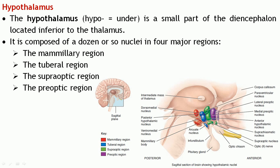Coming to the next part of the diencephalon: the hypothalamus. 'Hypo' means under, and it is named so because it is located just inferior to the thalamus. The hypothalamus again comprises a number of nuclei, divided into four major regions: the mammillary region, the tuberal region, the supraoptic region, and the preoptic region.